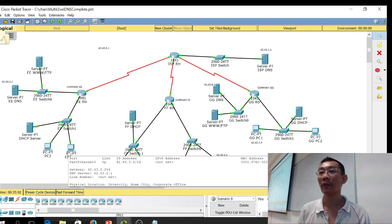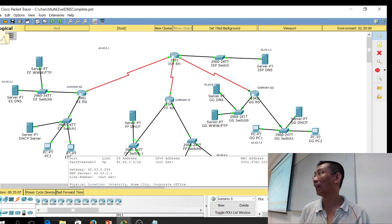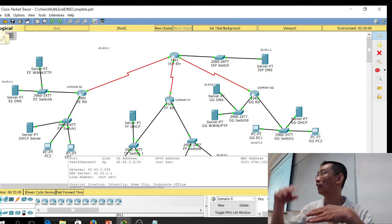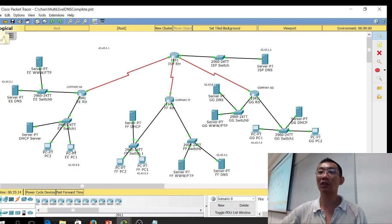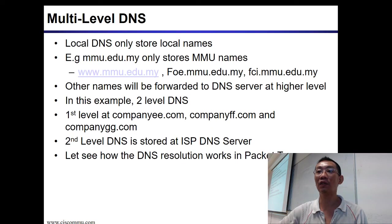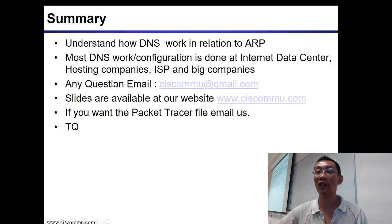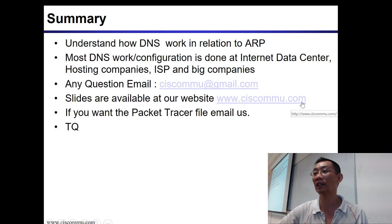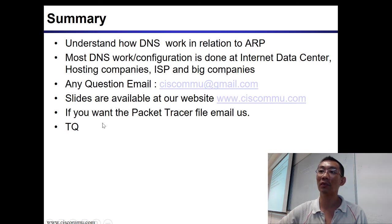This is how it actually works for two levels. In operational level, you may have three levels — you have country level, then you go to the root. Thank you everybody. If you have any questions, you can send us an email. The slides will be available at CiscoMMU.com. If you want the packet tracer file, send us an email.